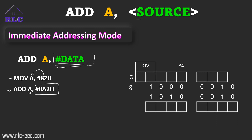Now, 82h in binary is 1000 0010, and 0A2h is 1010 0010. When we perform the addition bit by bit: 0+0=0, 1+1=0 carry 1, 1+0=1, 1+0=1, 1+0=1, 0+0=0, 0+0=0, 0+1 with carry gives 0 carry 1. The auxiliary carry flag is 0, and the carry flag is set to 1.